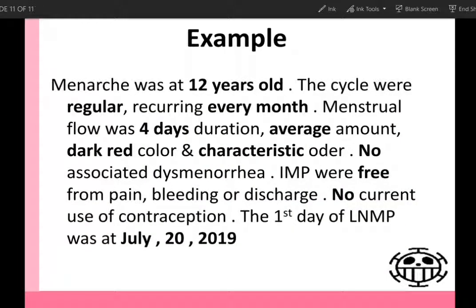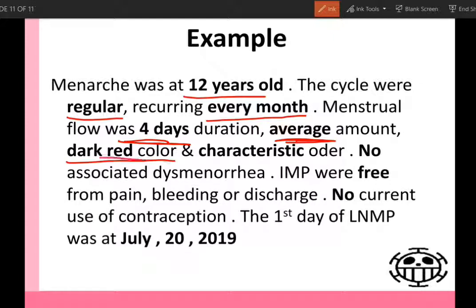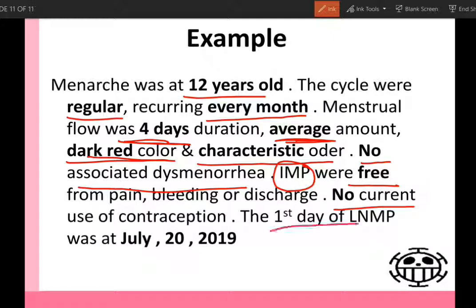After taking the menstrual history, here is an example of how to write the paragraph. Menarche was at 12 years old. The cycles were regular, recurring every month. Menstrual flow was four days duration, average amount, dark red color, characteristic odor, and no associated dysmenorrhea. Intermenstrual periods were free from pain, bleeding, or discharge. No current use of contraception. The first day of the last normal menstrual period was July 20, 2019.